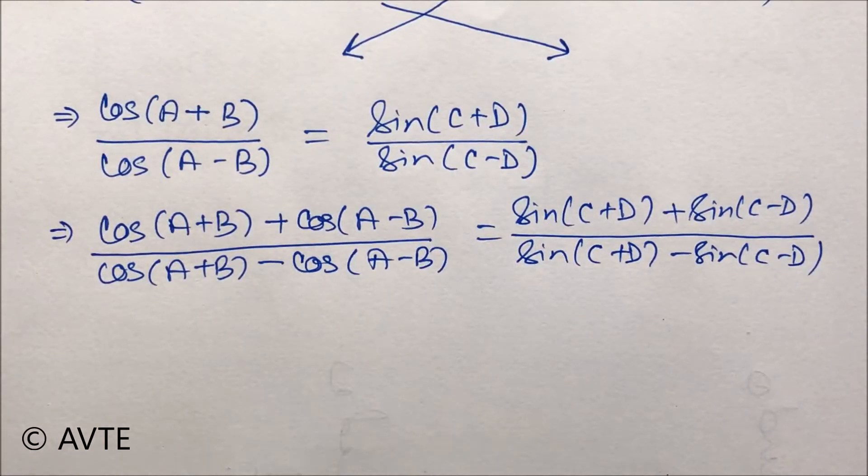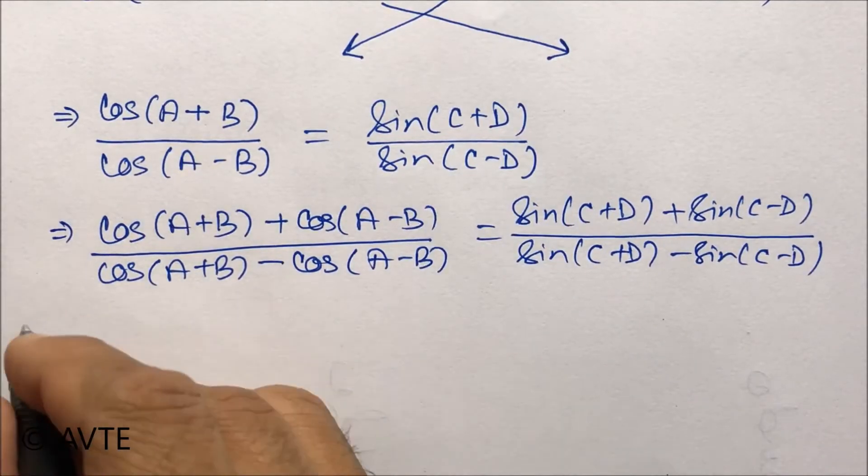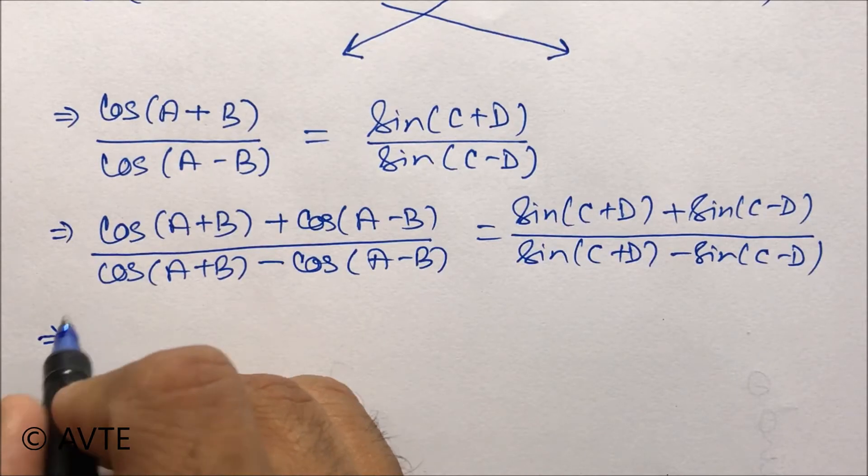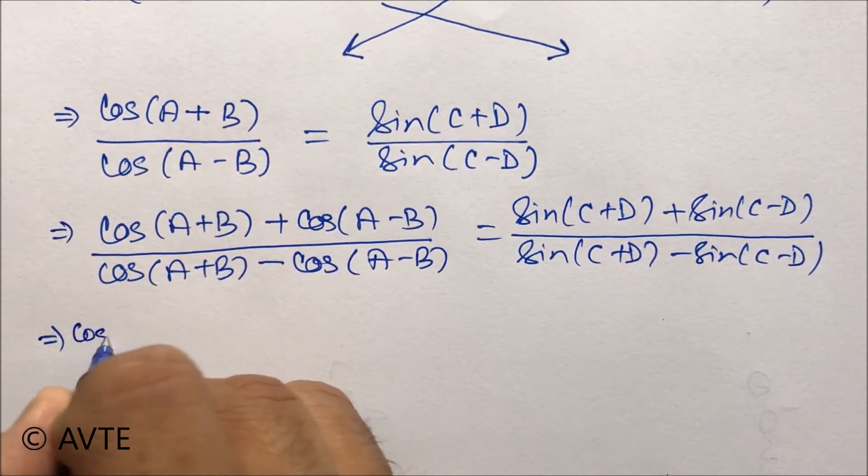Now there are two possibilities. If you have done trigonometry to this extent, then cos(A + B) plus cos(A - B) is the direct formula. If you haven't, because we are only doing questions based on addition and subtraction, then you can actually open it.